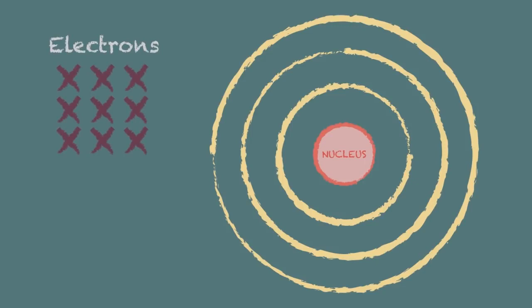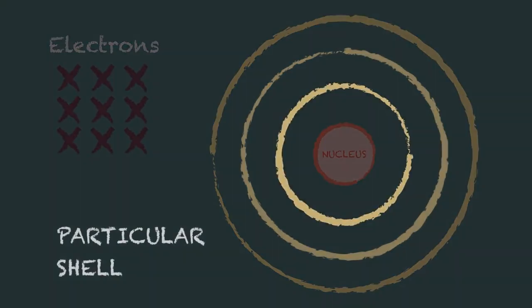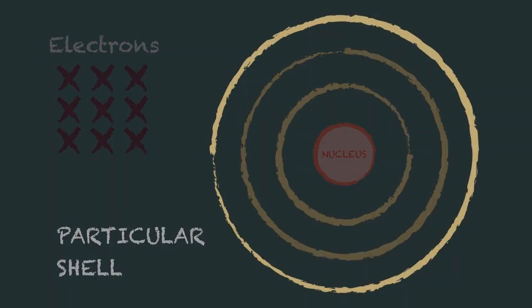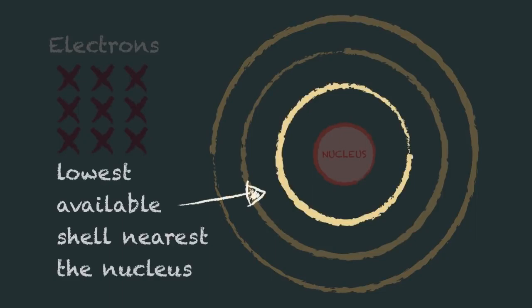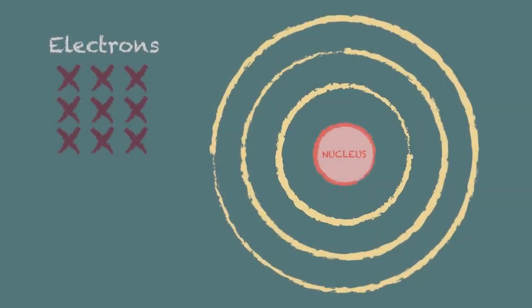Each electron in an atom is in a particular shell and the electrons must occupy the lowest available shell nearest the nucleus. So when we are drawing the electron configuration we have to fill up each shell in turn starting with the lowest.